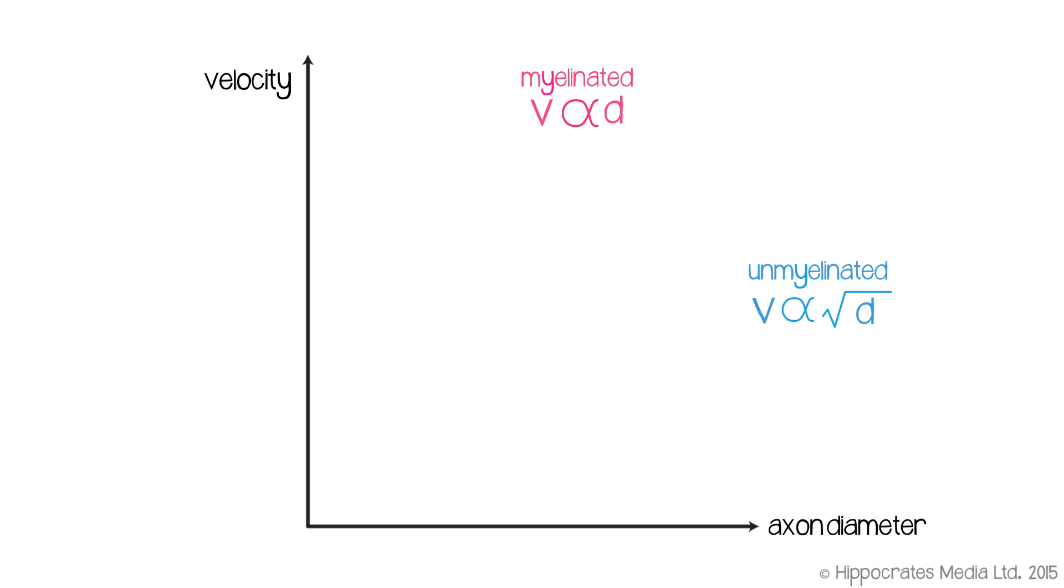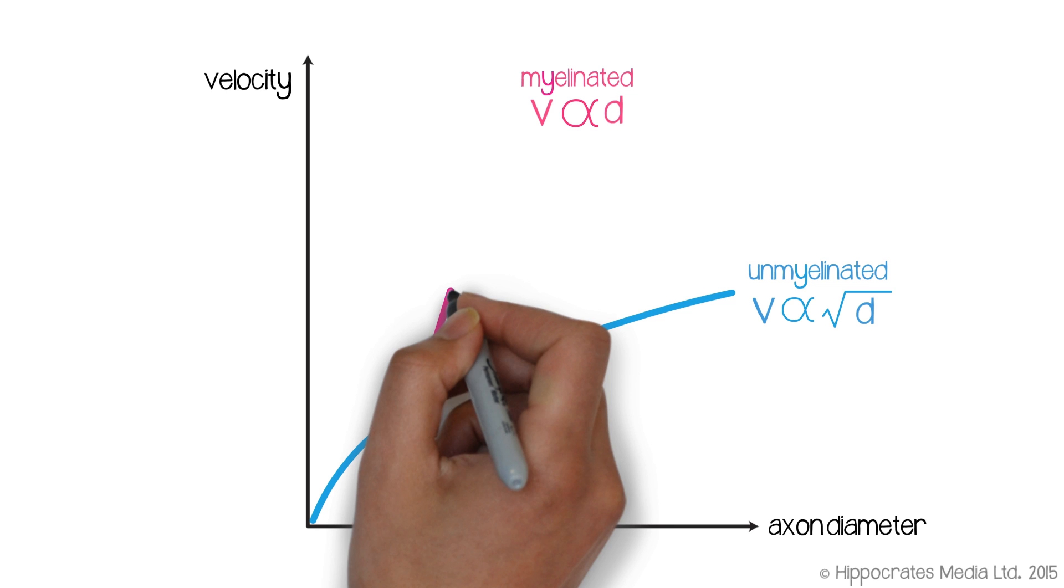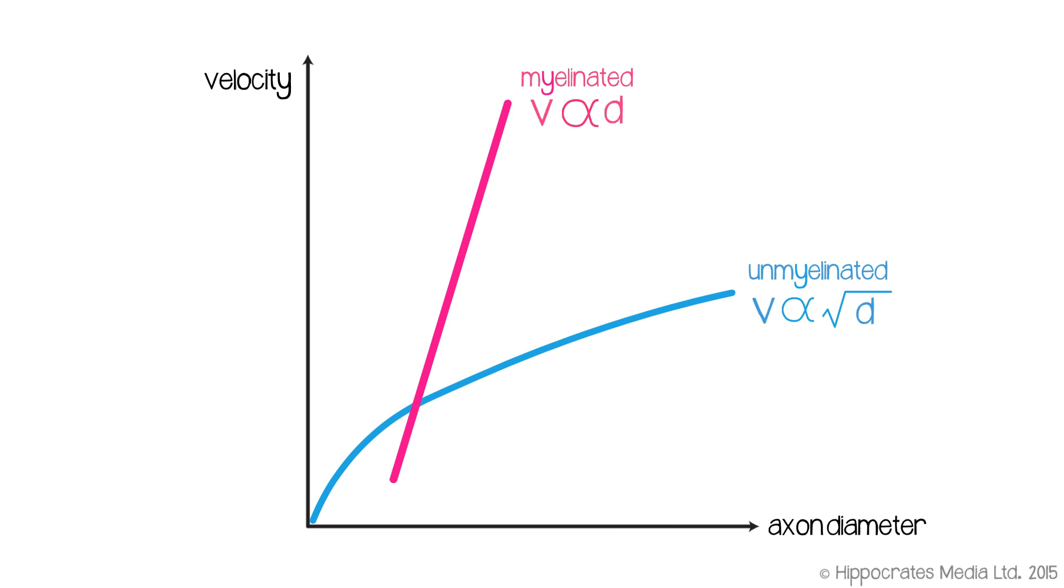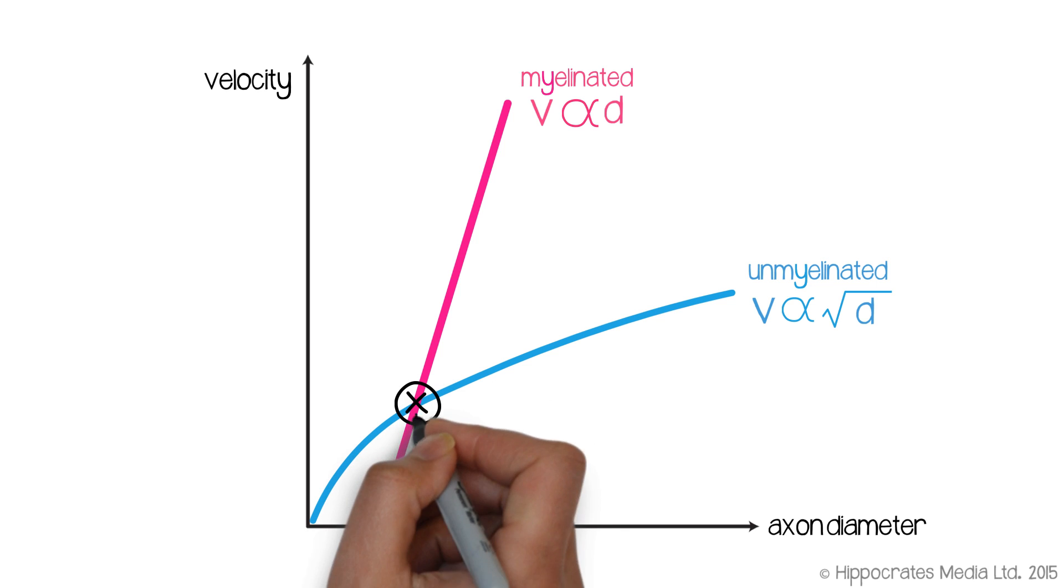For the unmyelinated nerve fibers, because velocity is proportional to the square root of the diameter, you have a curve. But for the myelinated fibers, if it's proportional to diameter directly, you have a straight line. And Rushton found that the curve and the straight line cross at an axon diameter of around 1 micrometer.